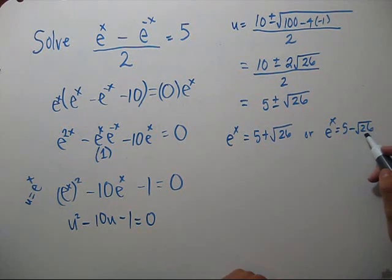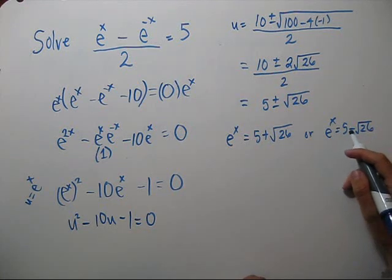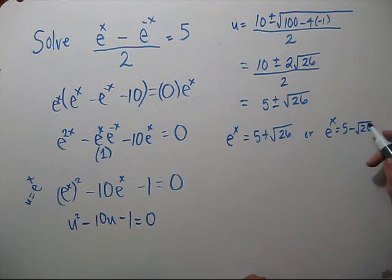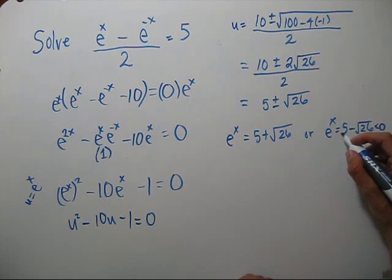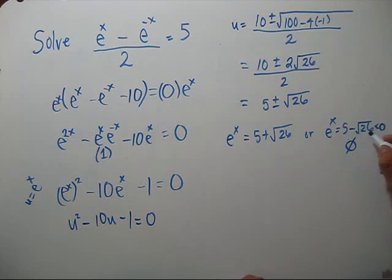Square root of 25 is 5, so square root of 26 is a little bigger than 5. So 5 minus root 26 will be negative. Since e to the x is never negative, this equation has no solution.